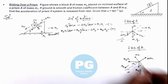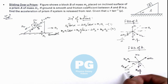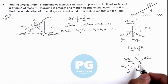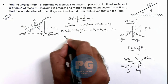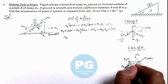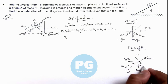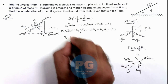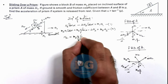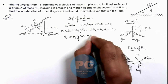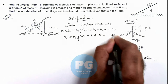The third equation is written in the direction normal to the prism surface where block B has no acceleration perpendicular to the incline. So: N2 + m2·a1·sin(α) = m2·g·cos(α). Therefore N2 = m2·g·cos(α) − m2·a1·sin(α). This is Equation 3.